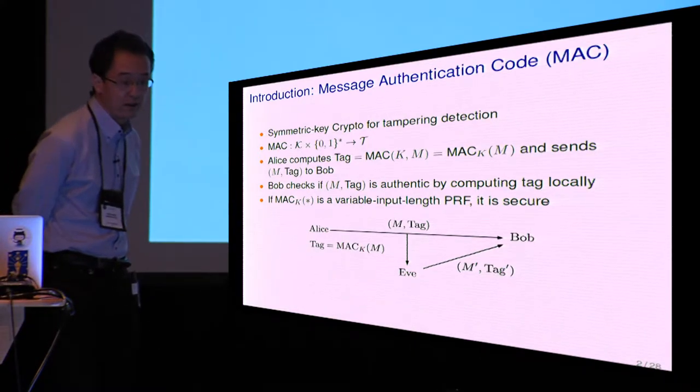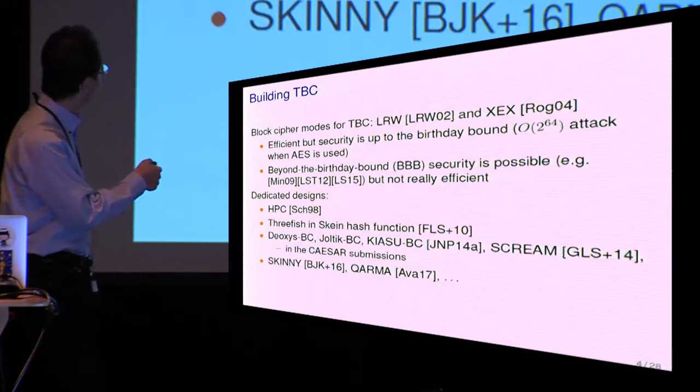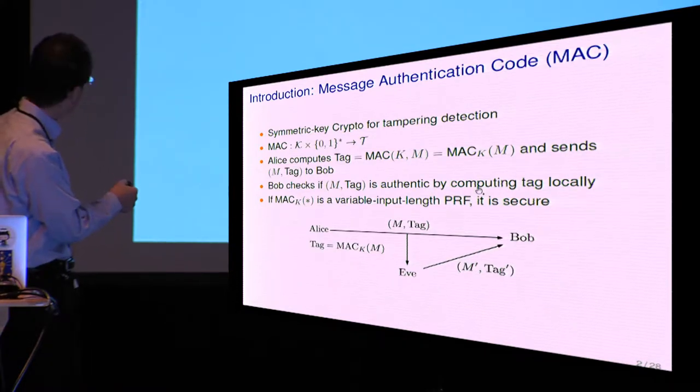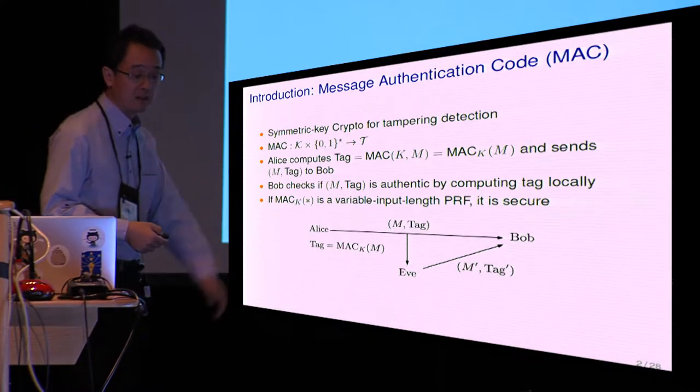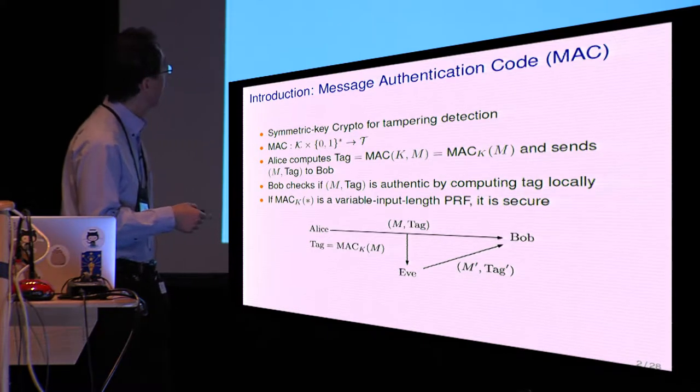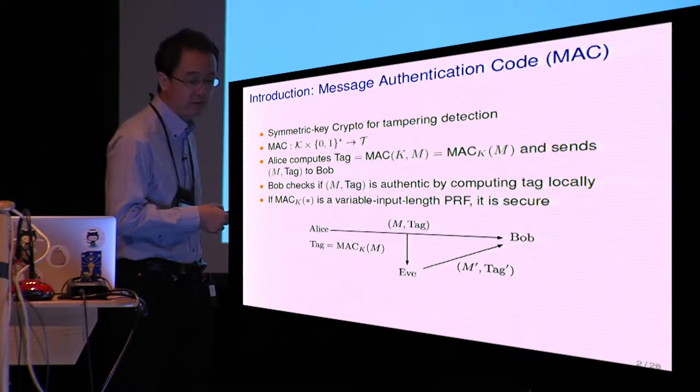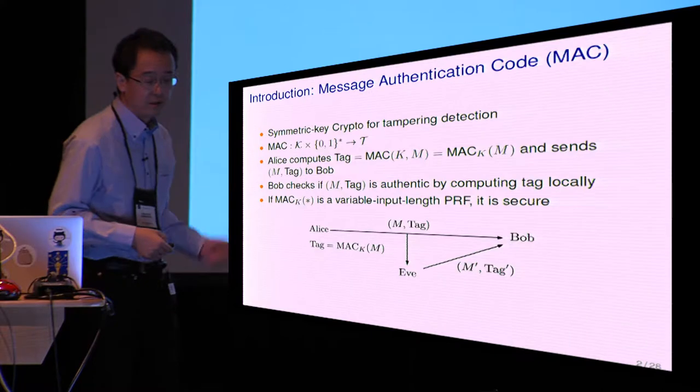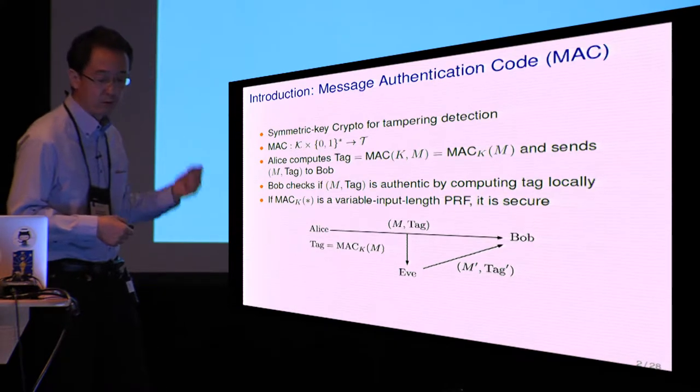This is a symmetric key crypto for tampering detection. The main component is the MAC function, taking the key and message, which has variable length, to produce a tag of fixed length. In the typical usage scenario, Alice computes the tag as an output of the MAC function, taking key and message, and sends the pair of MAC message and tag to Bob. Bob checks if this pair is correct by computing the tag locally and comparing it with the received tag. It is known that if the MAC function is a variable input length pseudorandom function, this MAC protocol is secure.